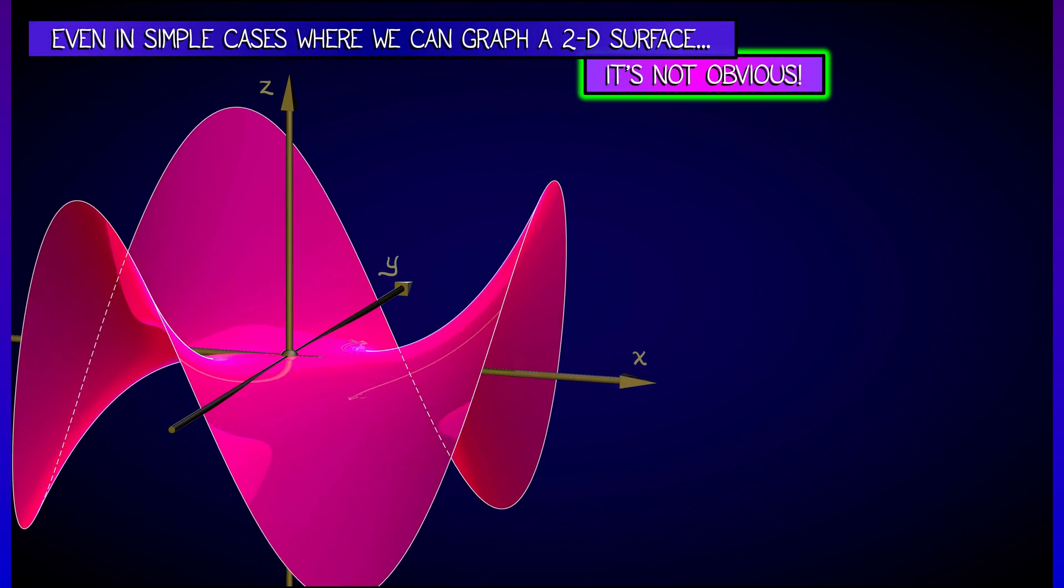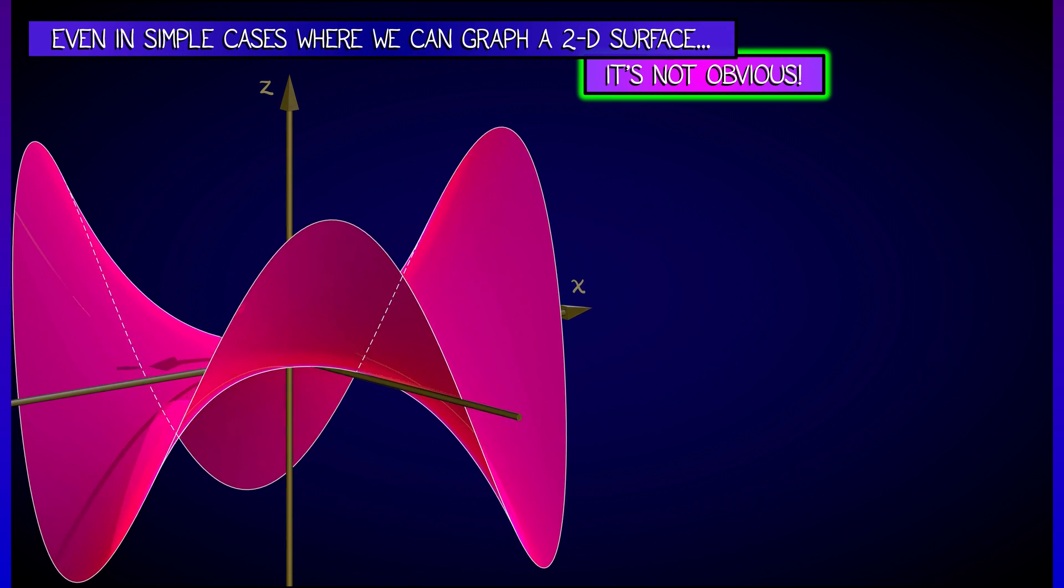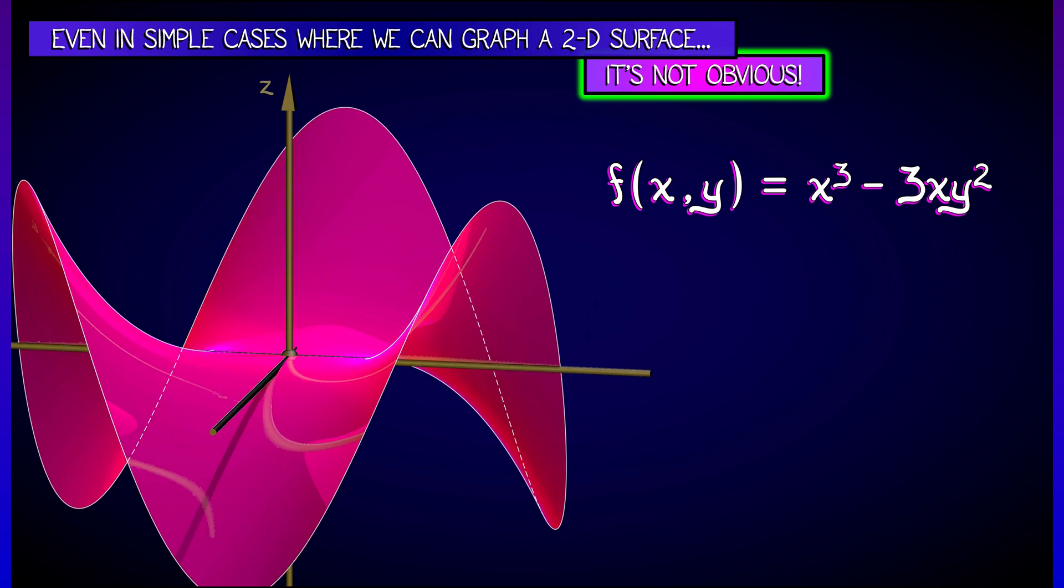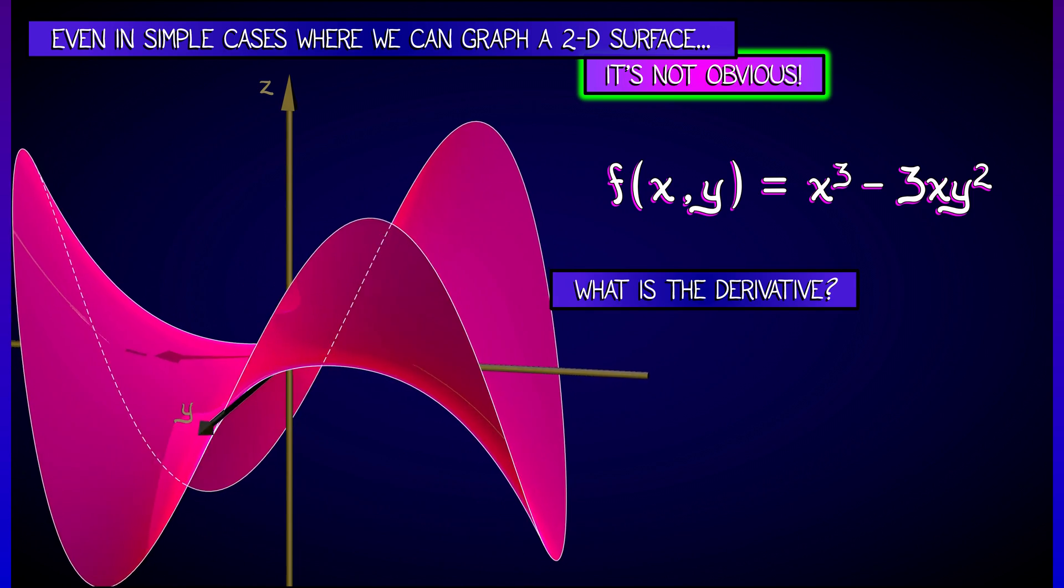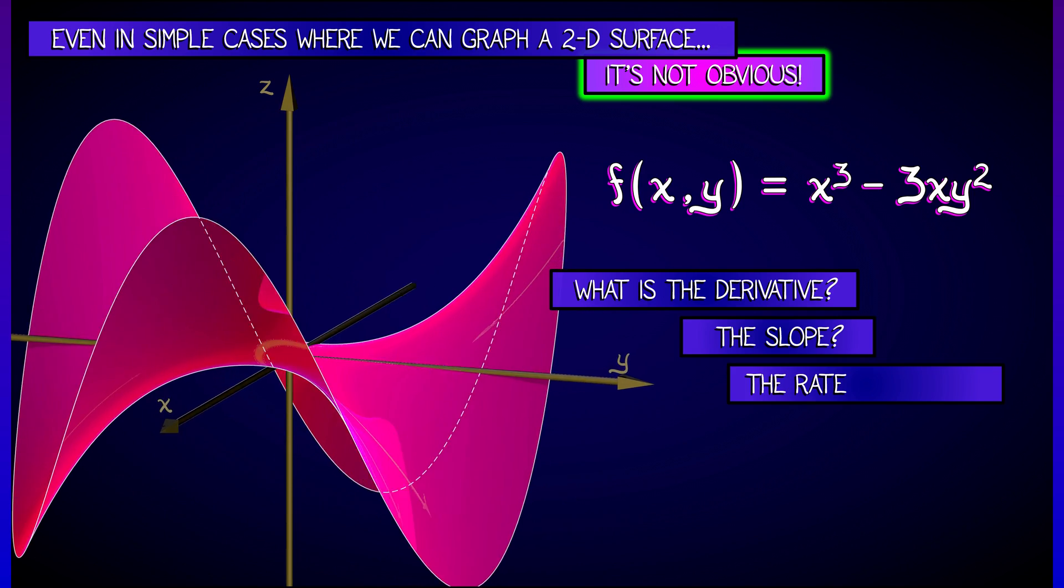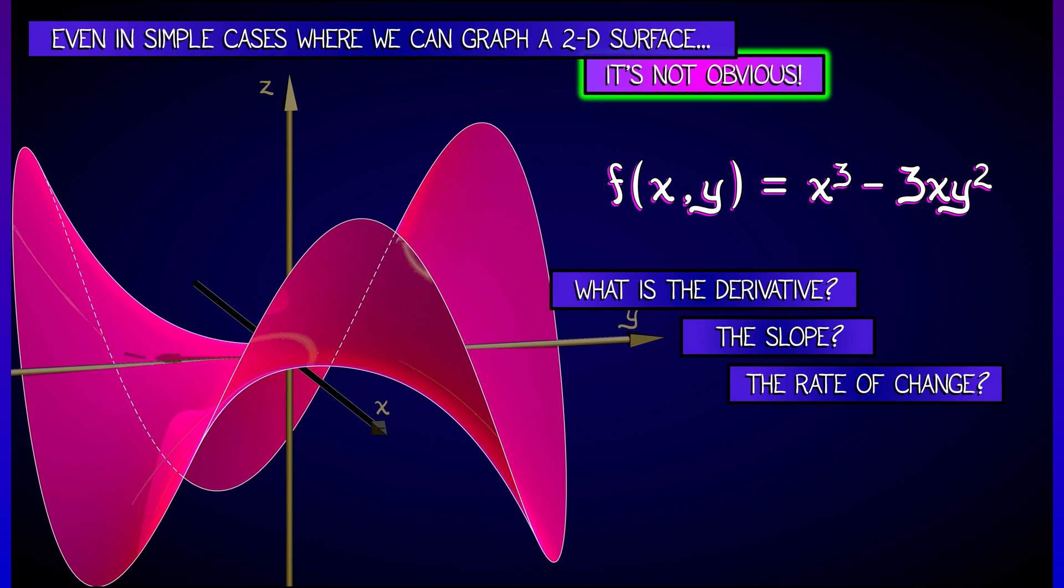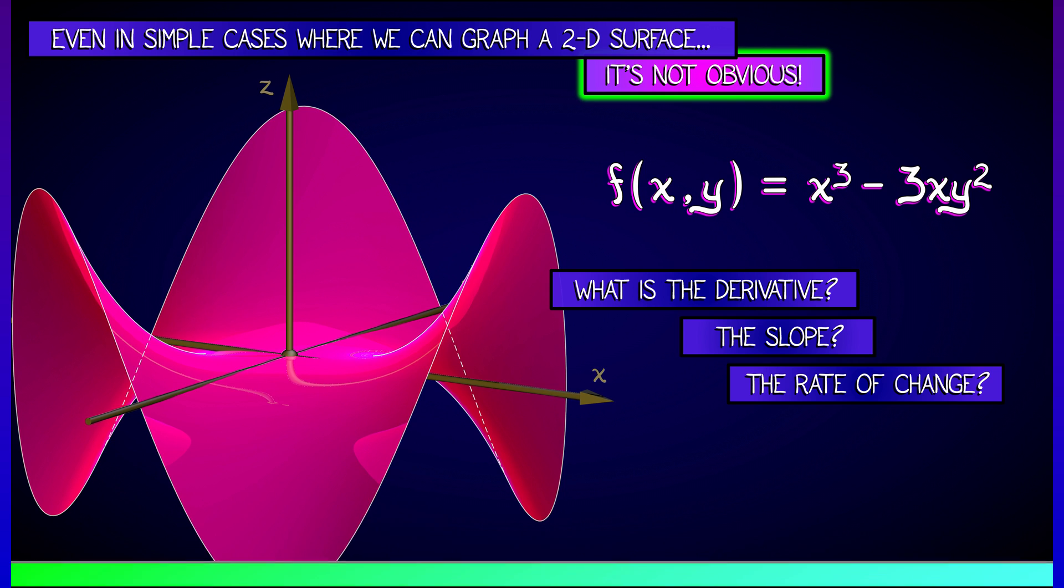Look, even in a simple case where we could draw a graph, such as with a surface, it is not obvious what to do. Consider the following simple polynomial function of two variables. What's the derivative? Is it some kind of slope? Is it some kind of rate of change? It's not so clear what to do, and this is a simple case.